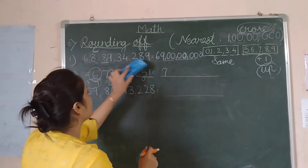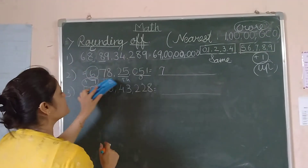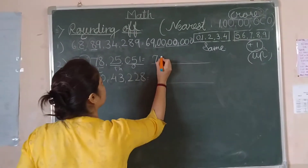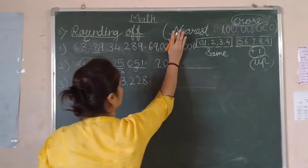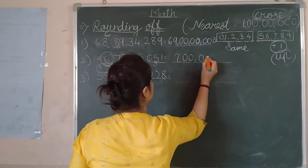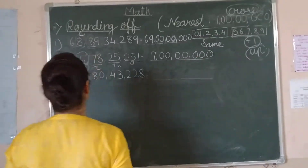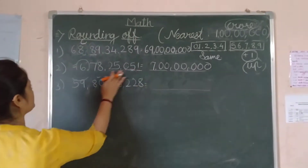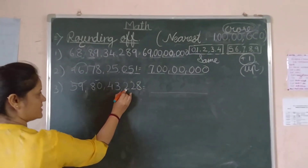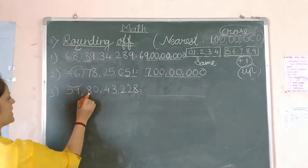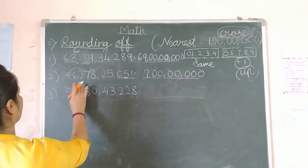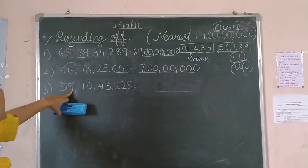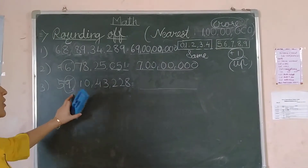Now we write 0 instead of all the remaining digits after the crore place. So we write 7 in the crore place and zeros after it: 0, 0, 0, 0, 0. The next place value period: ones, hundreds, thousands, ten-thousands, and the digit 9 is in the crore place.